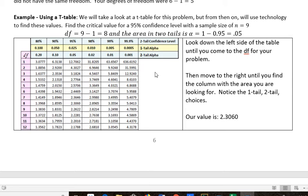So we're looking for the area in two tails of 0.05. So start off by looking down the left side of your table for the df that you're interested in, which we said was 8. And then we want to go along here and find the column that matches what we're interested in.